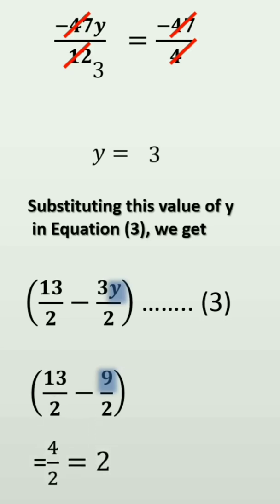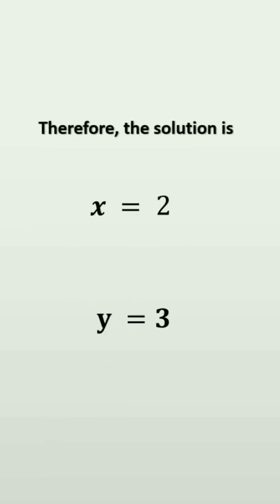So, 13 minus 9, that is 4 by 2. 2 is the LCM. 4 by 2 is equal to 2. So, the solution is x is equal to 2, y is equal to 3.